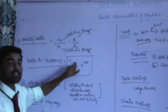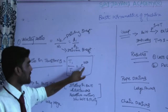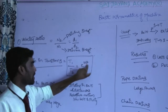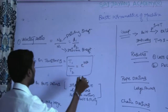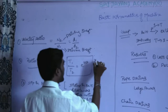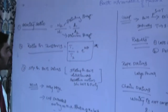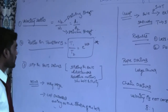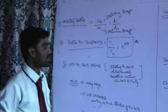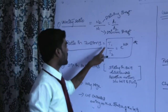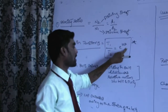T1 is the tight side and T2 is the slack side. The formula is T1 by T2 equals E raised to mu theta, where theta is in radians and mu is the coefficient of friction. This is a very important formula.